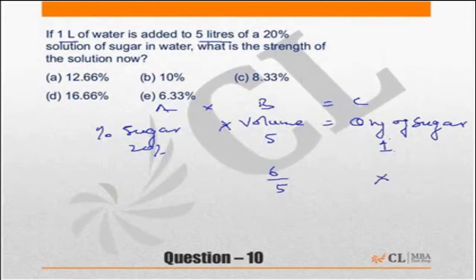The quantity of sugar will not change because you're adding water, not sugar. Since the quantity of sugar remains the same and the volume becomes 6 by 5 times, the percentage of sugar should become 5 by 6 times.